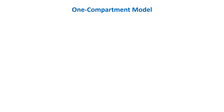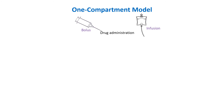Now let's draw an outline to understand the one compartment model more clearly. The one compartment model, or any other compartment model, begins with drug administration. For anesthesia, it's usually a bolus administration or infusion.